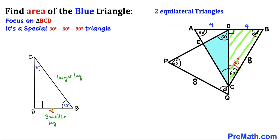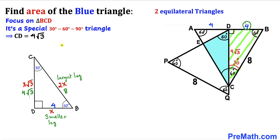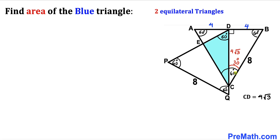If the smallest leg is x, then the largest leg is 2x and the third leg is x√3. Since BD is 4 units, the largest leg BC is 2×4 = 8, and the third leg CD is 4√3. We also observe that the full angle at B is 60 degrees, the angle at D in triangle BCD is 30 degrees, so the remaining angle is 30 degrees as well.